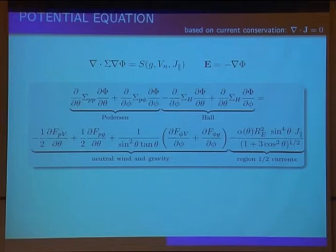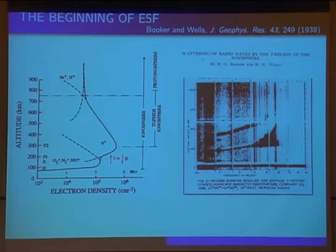And we solve a potential... We don't solve this entire thing all the time for the specific problems we're working on, but nonetheless, there's Pedersen and Hall conductances, neutral wind and gravity are in it, as well as including region 1 and region 2 current systems when we go to high latitude. That's kind of a really quick overview of the SAMe-3 model, the equations we solve and some of the things we're doing with it.